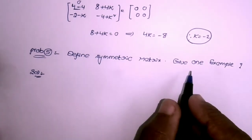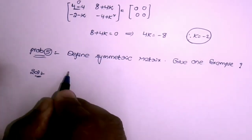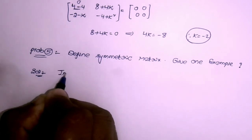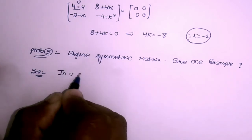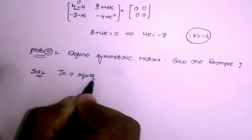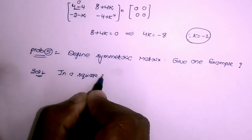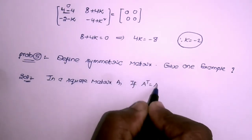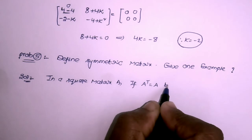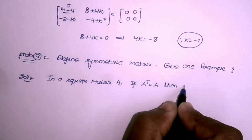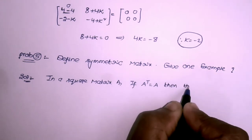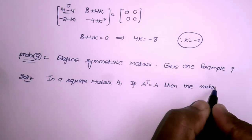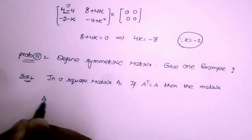Fifth question: define a symmetric matrix and give one example. In a square matrix A, if A transpose equals A (A' = A), then the matrix A is said to be a symmetric matrix.